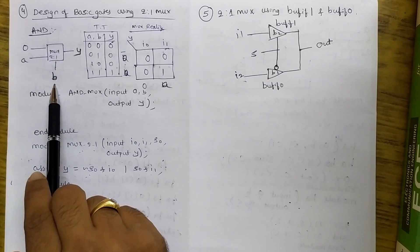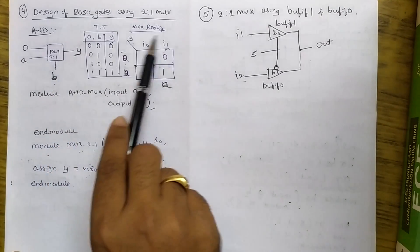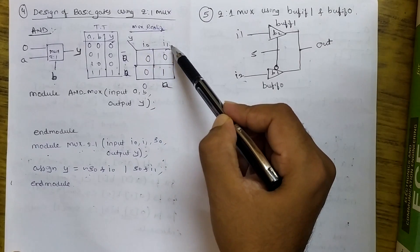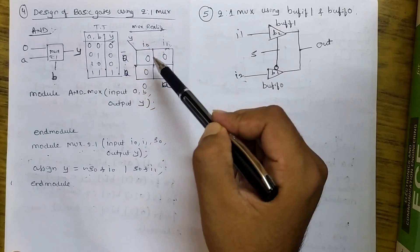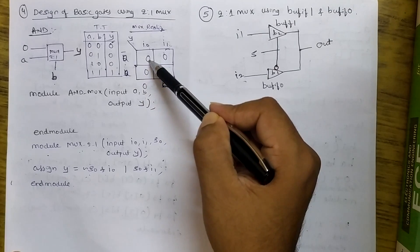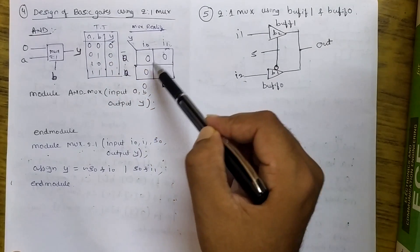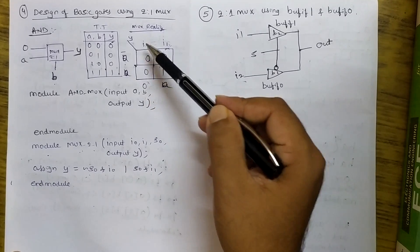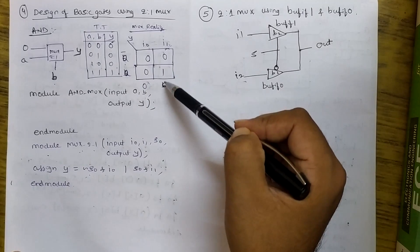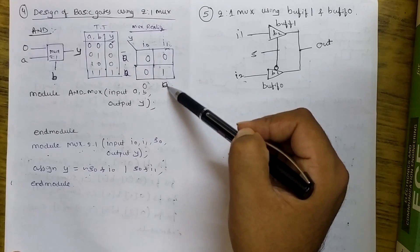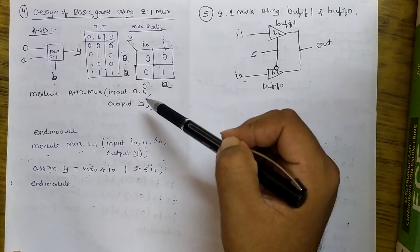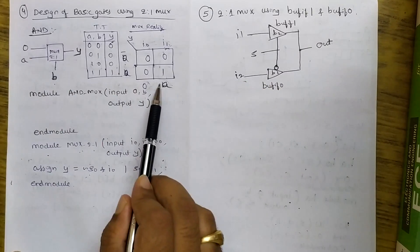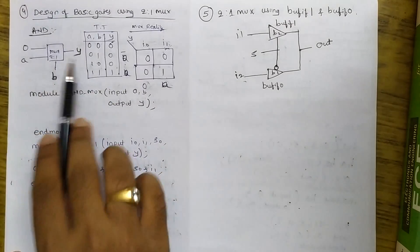Using this MUX I need to design an AND gate. The AND gate truth table is written here. I use B as the select line and Y as the output. Looking at the truth table: when B=0, I need to supply logic 0 to I0; when B=1, I need to supply A to I1. So I0 is allotted logic zero, I1 is supplied with A, and B is the select line.